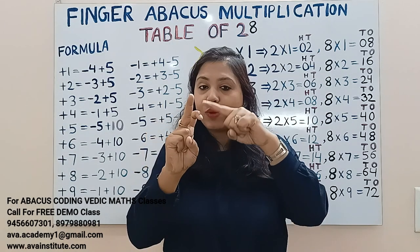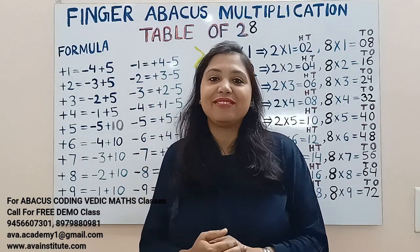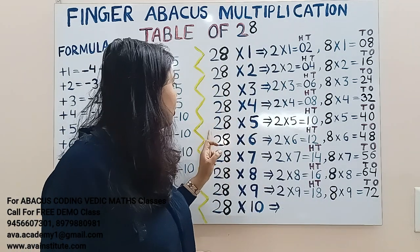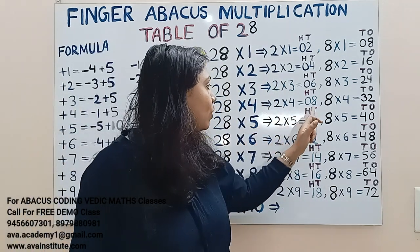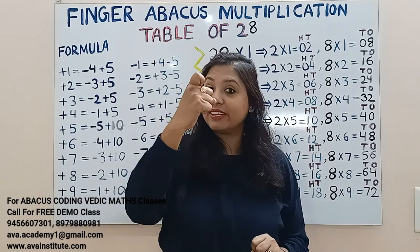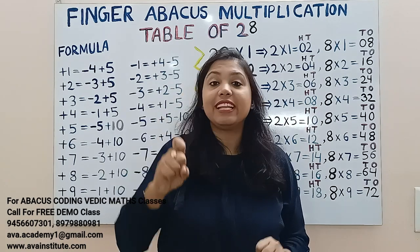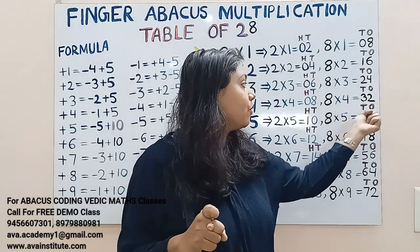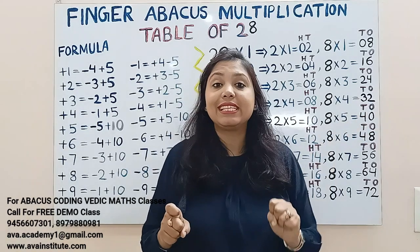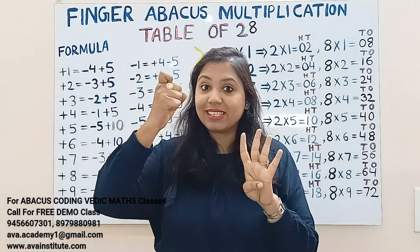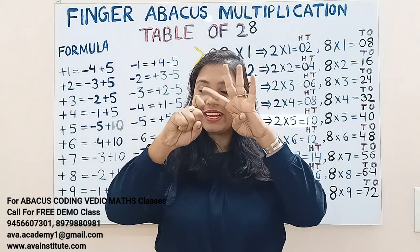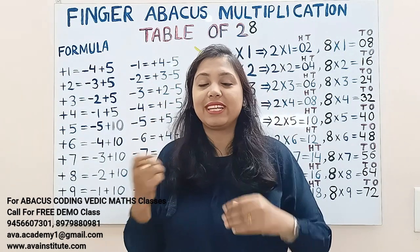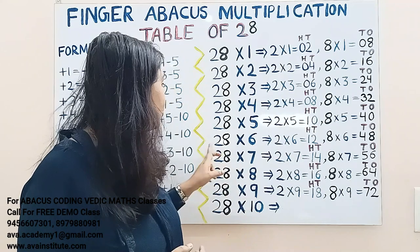Next, 28 fives: 2 fives are 10 — in hundreds: 1, in tens: 0. Now 8 fives are 40 — in tens: 4, in ones: 0. So what is the answer? 100, 110, 120, 130, 140. 140 is the answer.